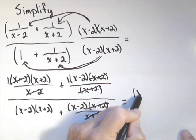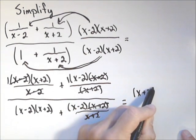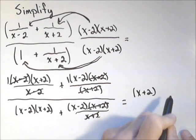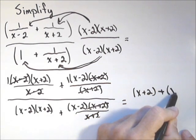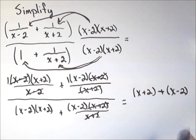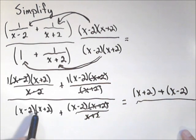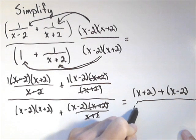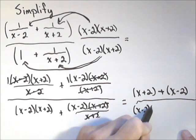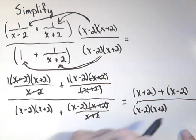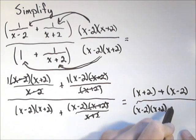I have an x plus two plus an x minus two. In the denominator, I have x minus two times x plus two. X minus two times x plus two plus an x minus two.